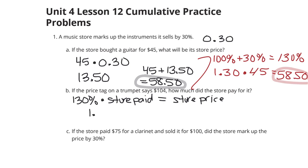In other words, our 1 and 30 hundredths times what the store paid is equal to the store price of $104. So, to find what the store paid, if I divide here by the 1 and 30 hundredths, 104 divided by 1 and 30 hundredths is going to be $80. So, the store paid was equal to $80.